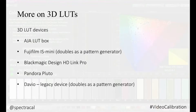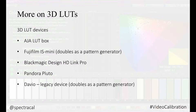Here are some manufacturers making external 3D LUT devices for inserting between the source and the display. AJA makes a great LUT box. Fujifilm makes the IS-Mini, which also doubles as a pattern generator with SDI and HDMI output. There is the Blackmagic Design HD-Link Pro, Pandora's device called the Pluto, and the Davio, which also doubles as a pattern generator and works beautifully with CalMAN.